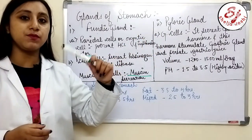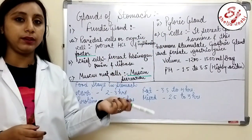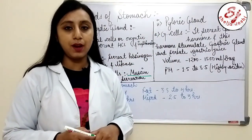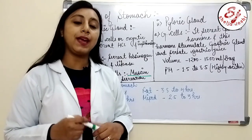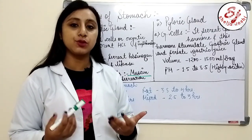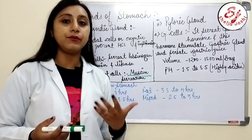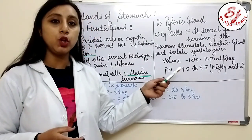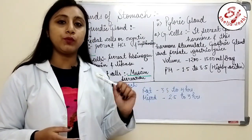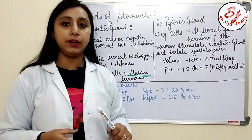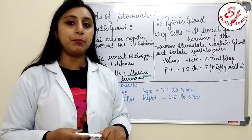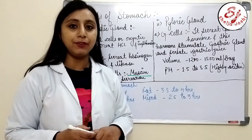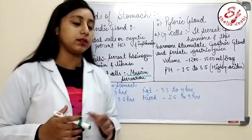The pyloric gland is found in the pyloric region of the stomach. G-cells secrete the gastric hormone, which stimulates gastric glands to secrete gastric juices. The volume of gastric juice is about 1200 to 1500 ml per day, and the pH is 1.5 to 3.5, meaning it is highly acidic.